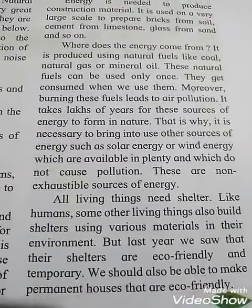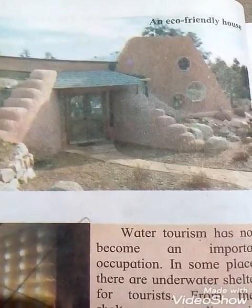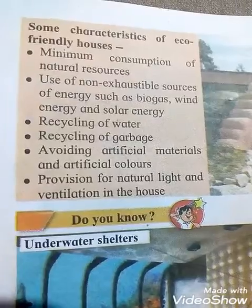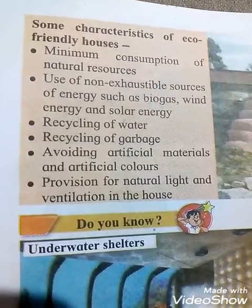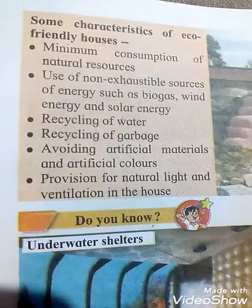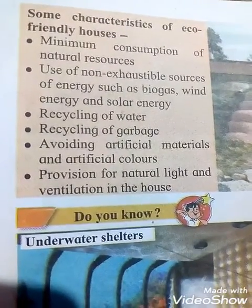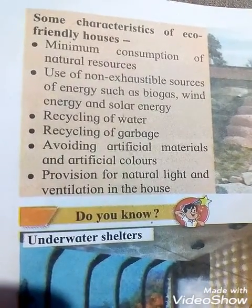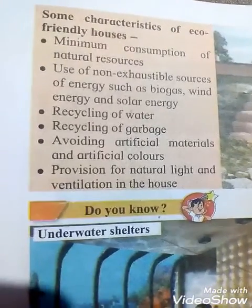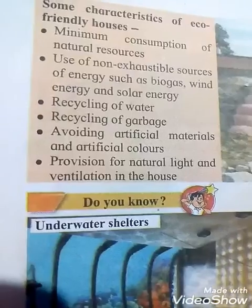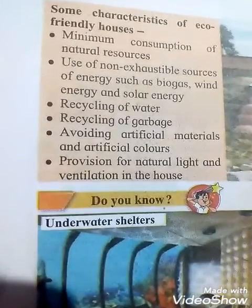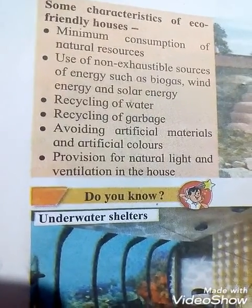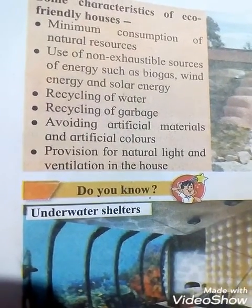This is a picture of an eco-friendly house. Some characteristics of eco-friendly houses are: first, minimum consumption of natural resources; second, use of non-exhaustible sources of energy such as biogas, wind energy, and solar energy; third, recycling of water; fourth, recycling of garbage; fifth, avoiding artificial materials and artificial colors.